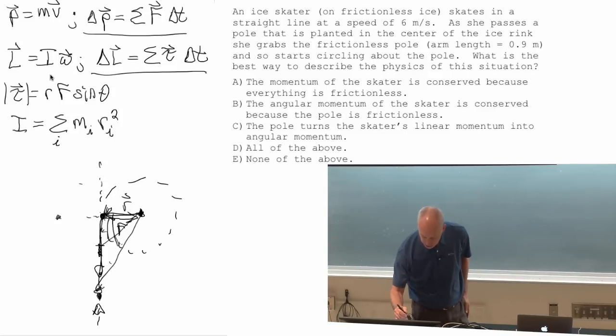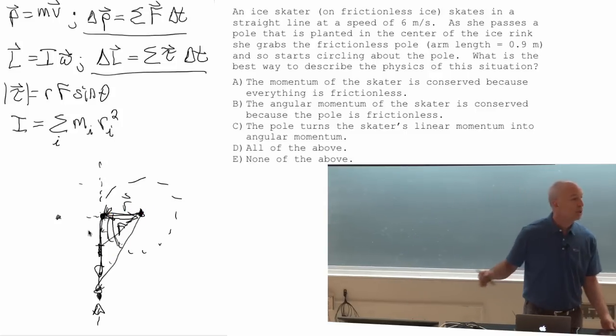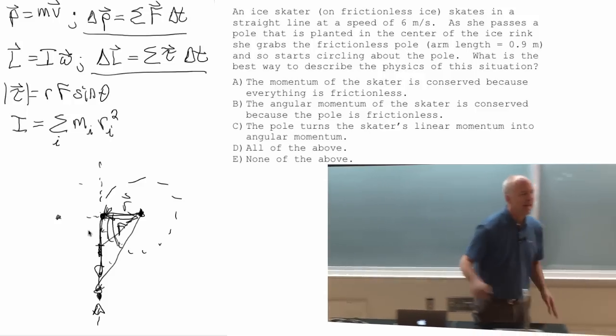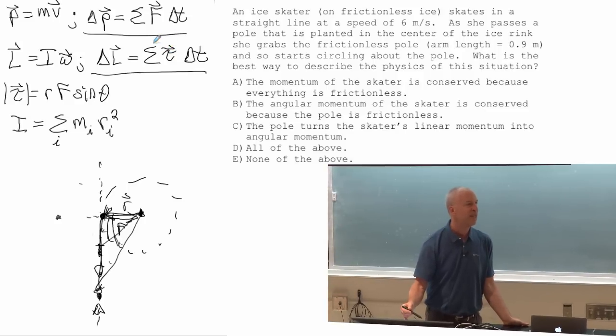I is changing because her r vector, the distance from the pivot point is changing. So her rotational inertia is changing, and it gets a little complicated, which is why I try to take the route around that complication.